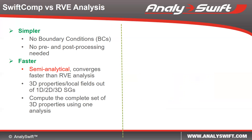SWIFT-CON can also compute the complete set of 3D properties using a single analysis. But if you use RVE analysis, you have to run at least six analyses to compute the complete set of 3D properties, running each analysis along a certain direction to get properties along certain directions.